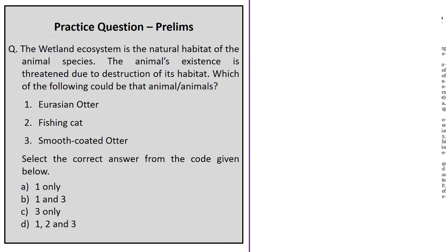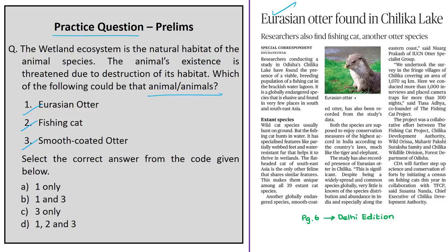The practice question asks: the wetland ecosystem is the natural habitat of an animal whose existence is threatened due to destruction of its habitat — which of the following could be that animal? The three options are Eurasian otter, fishing cat, and smooth-coated otter. This question was framed based on a news article about a study in Odisha's Chilika Lake, which found a viable breeding population of fishing cat in the brackish water lagoon, as well as smooth-coated otter and Eurasian otter.